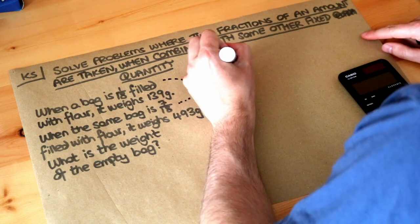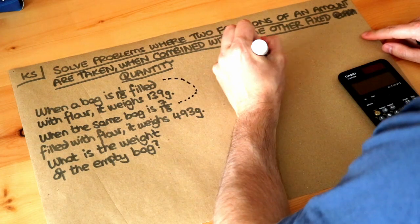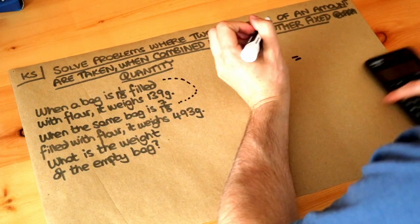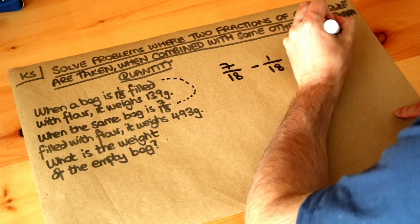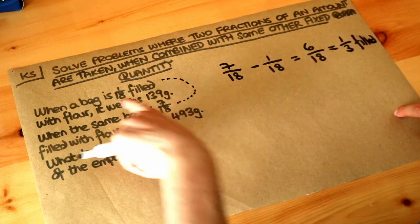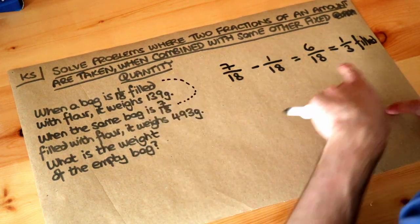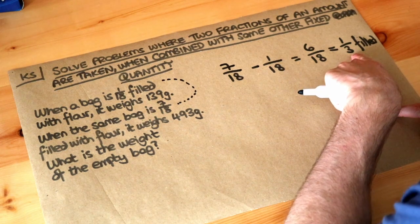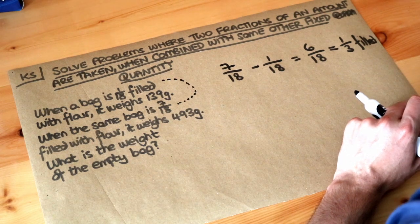Well we just need to subtract those, so if we do 7/18ths minus that 1/18th that gives you 6/18ths which simplifies to a third filled. So that means when we go from 1/18th filled to 7/18ths filled with flour the bag is becoming a third more filled. It's increasing by a third of the capacity of the bag.